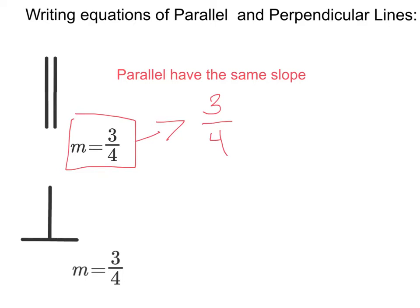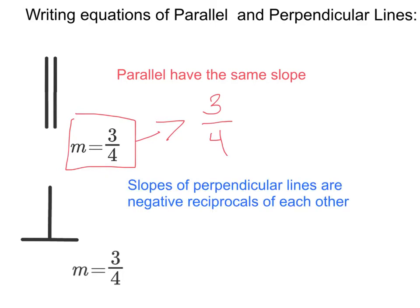Now let's learn about perpendicular lines. The slopes of perpendicular lines are negative reciprocals of each other. That means if we're given a line with a slope of 3/4, then to get the slope of a perpendicular line, we flip the slope upside down to 4/3 and change the sign, getting negative 4/3.